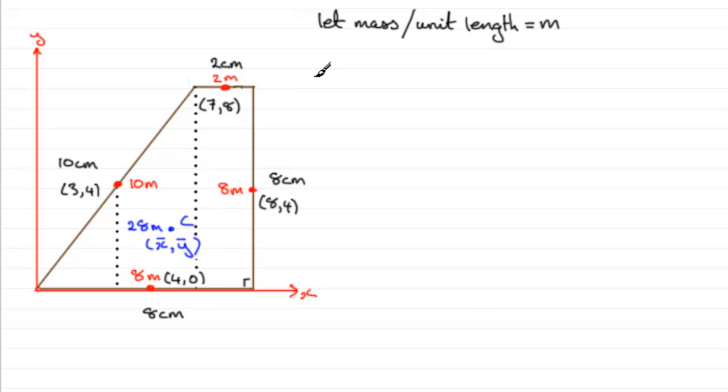Okay, so if we start with that moments equation, it's going to be a mass of 28M. And that's multiplied by x bar, y bar. And that's equal to the sum of the moments of all these particles about the x and y-axis. So if we start, say, with the 10M, that would be 10M multiplied by 3, 4.